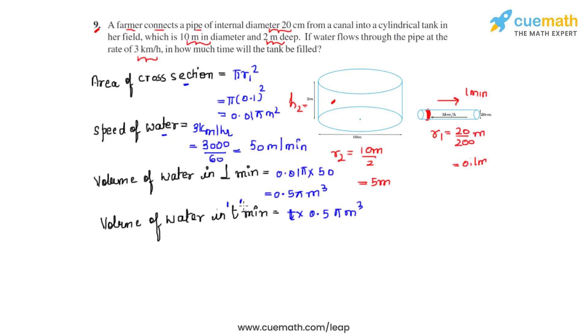Now this t is the time that it takes for the pipe to fill this tank completely. By filling it completely, we mean that the volume of water in the tank will be equal to the volume of the tank itself. So we can write: volume of water in t minutes equals volume of water in the tank.